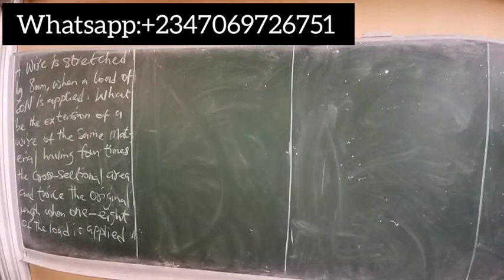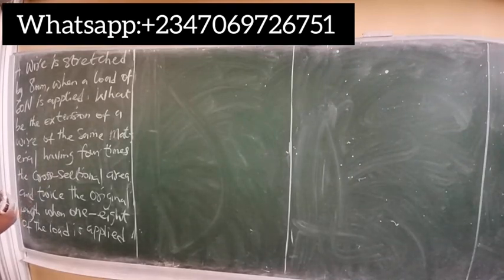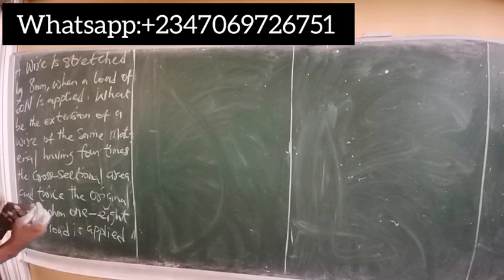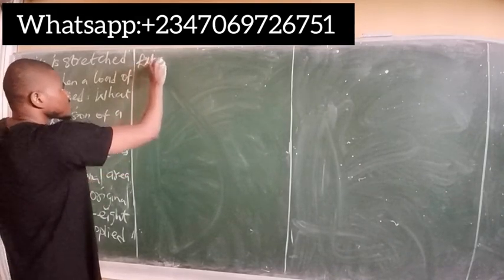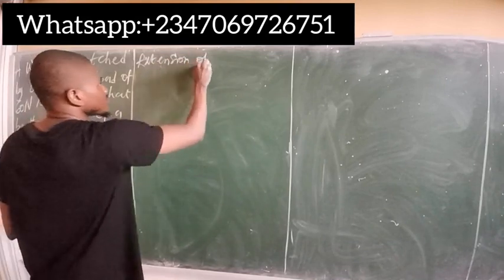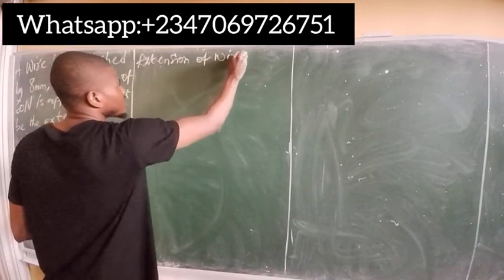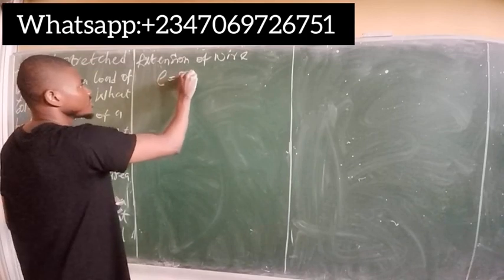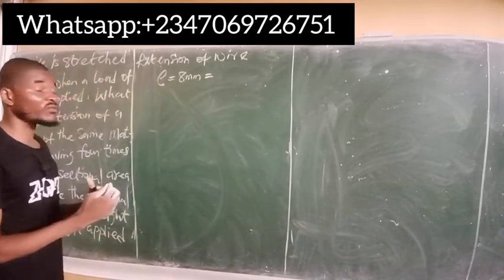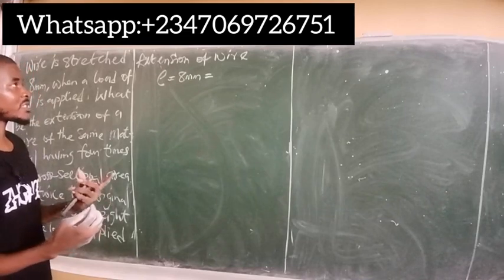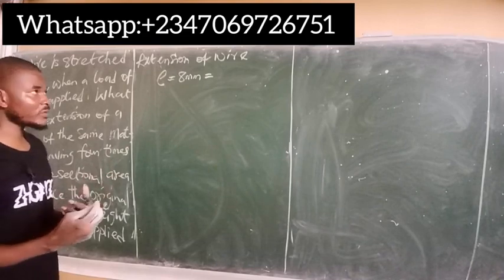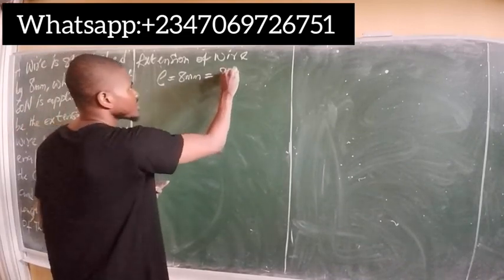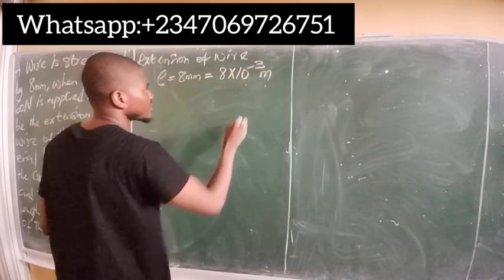This problem is actually simple. Let's bring out the parameters given to us. First condition: the wire is stretched by 8 millimeters — stretching simply means extension. So extension e equals 8 millimeters. Always convert your values to meters: 8 millimeters divided by 1000 gives us 8 times 10 to the power of minus 3 meters.